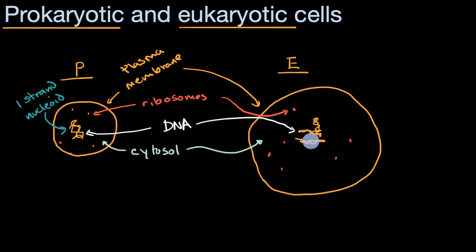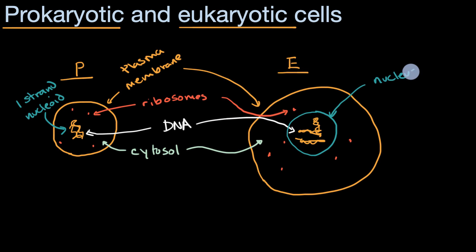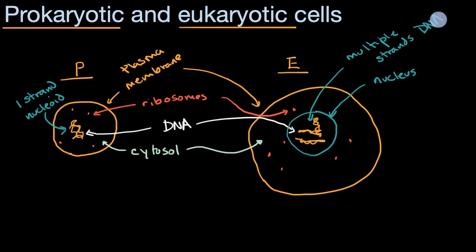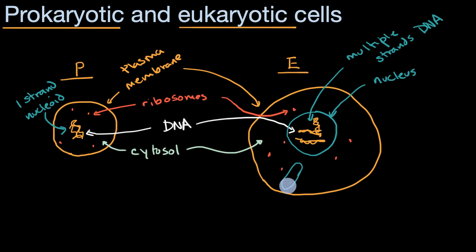When we're talking about eukaryotic cells, you're talking about multiple strands of DNA, and they are inside an organelle that itself has a membrane — and that organelle is called a nucleus. This idea of having a membrane-bound organelle — a substructure of the cell — is not just the nucleus. There are other membrane-bound organelles, like mitochondria, which you are not going to see in prokaryotic cells.